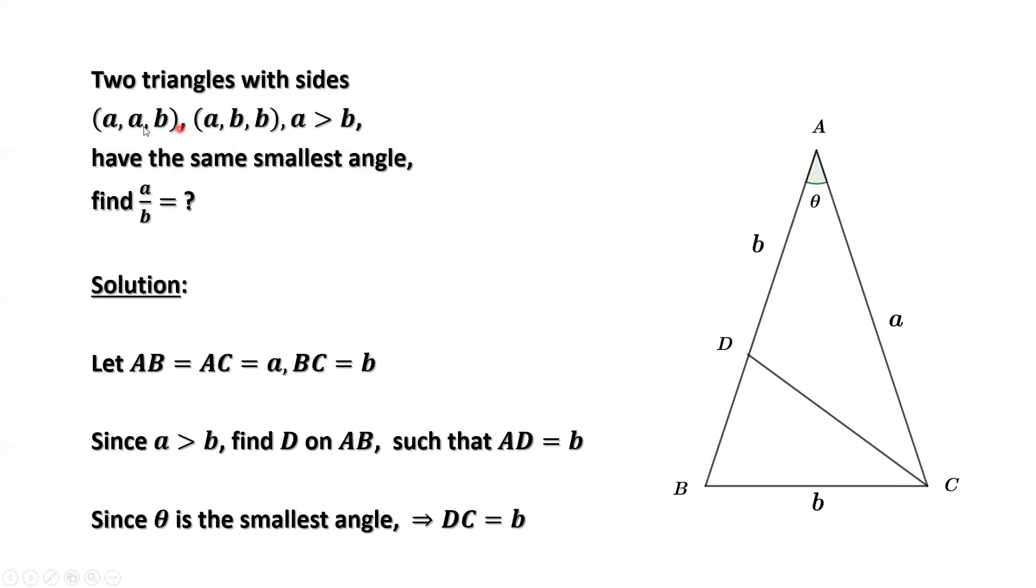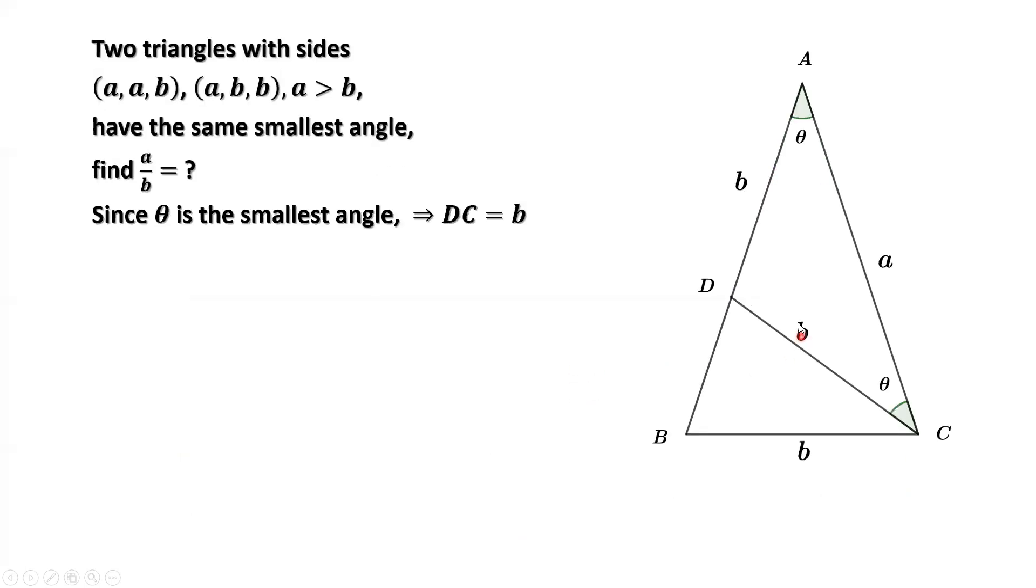By the definition of triangle (a, a, b) and triangle (a, b, b), the smallest angle theta is the same as the little one. So here, that's b, that's a, this side must be b, because this is the smallest angle. Actually this angle is the same as this angle, so that implies this is b.